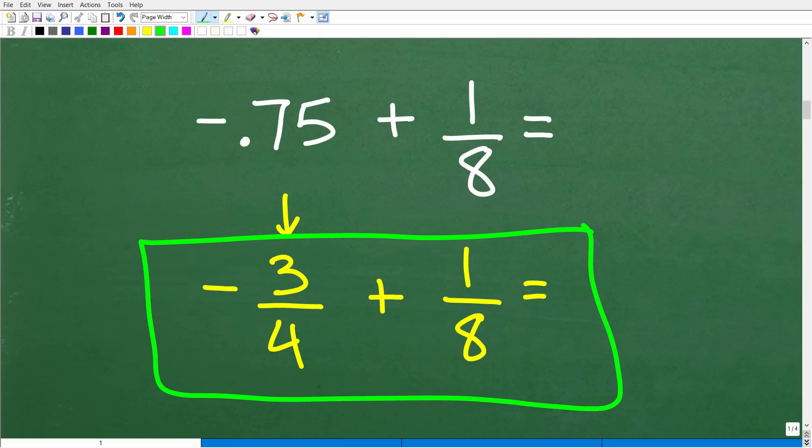Alright, so how do we add fractions? Well, we need to have the same denominators. And here we have 4 and here we have 8. So we need to be thinking about the LCD.